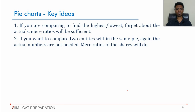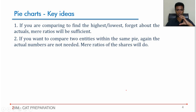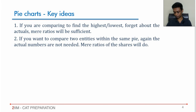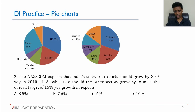Just to recap: if you are comparing highest and lowest, or comparing two pie charts to find ratios, the underlying base does not matter. If you are comparing within a pie — say 20% versus 40% of the pie — one has to double to catch up with the other, and the actual number is irrelevant. Keep that in mind.